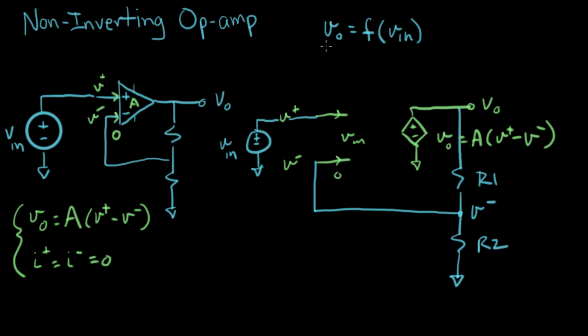So that's our two unknowns. Our unknowns are V out and V minus. So let's see if we can find them.